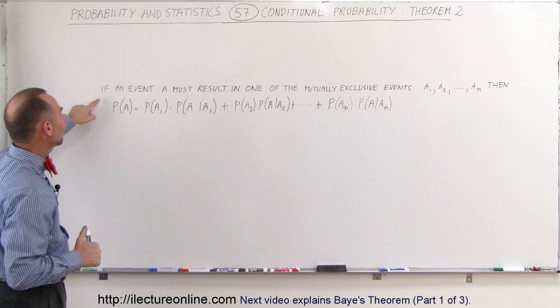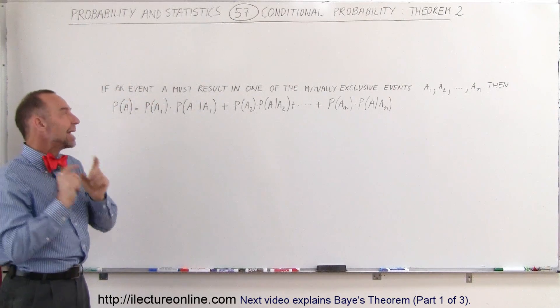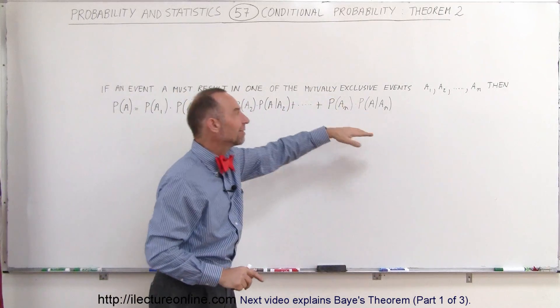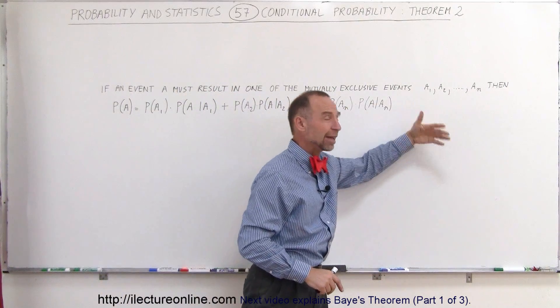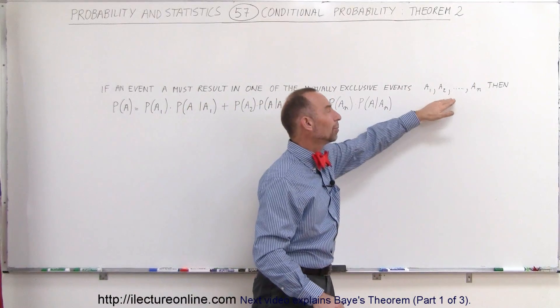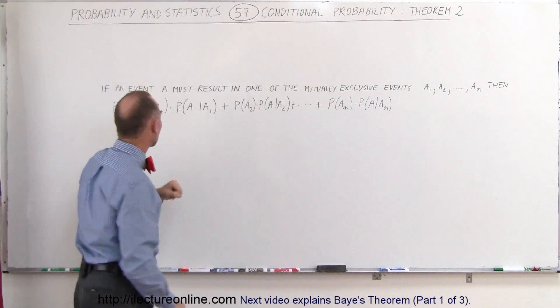Here we have an event A, and if that event A must result in one of the mutually exclusive events A1, A2, A3, A4, all the way up to An, so one of those events will be the result of A occurring.